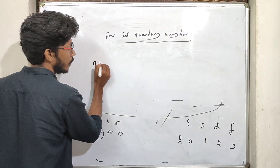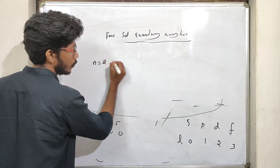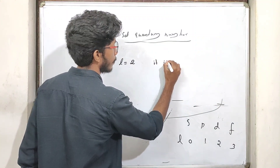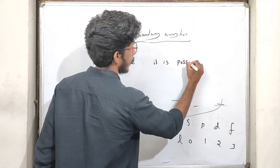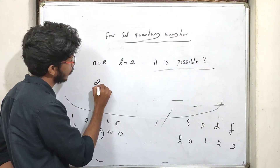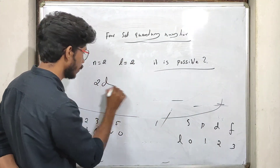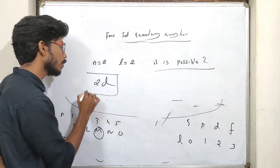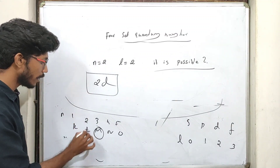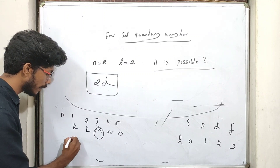Now, let's say n equals 2 and l equals 2. Is this possible? Let's check.